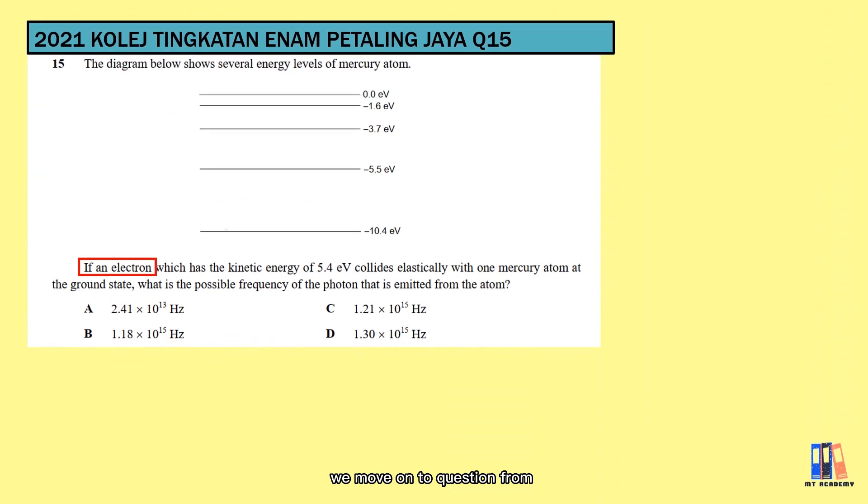Now, we move on to a question from Kolej Tunkatan Anan Petaling Jaya in 2021. Here it is showing the energy level of another atom. Let's calculate the energy required first. From the first to second orbit, we will need 4.9 eV and then from the first to the third orbit, we will need 6.7 eV.